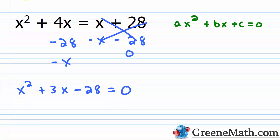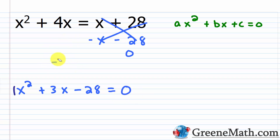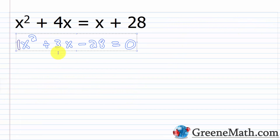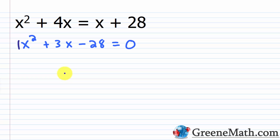So now it's in the format of ax squared plus bx plus c equals zero, where a is 1, b is 3, and c is negative 28. So this equals zero. Now that we have it in standard form, we want to factor it.